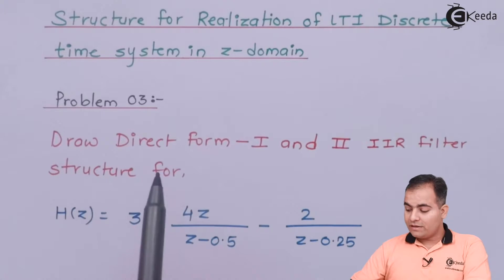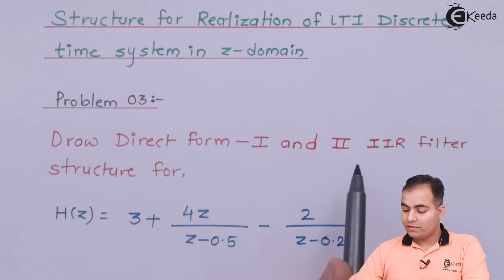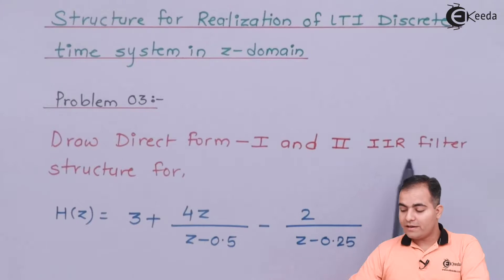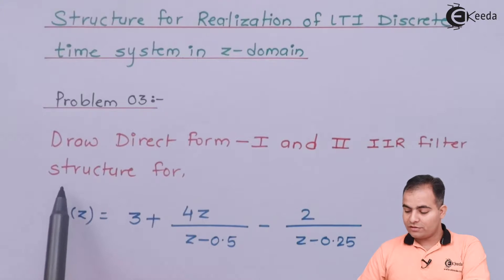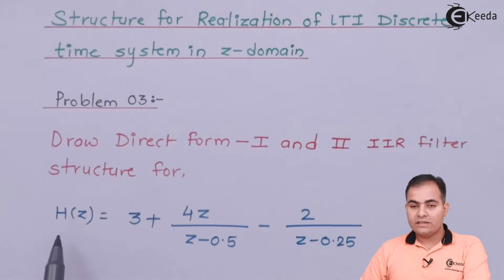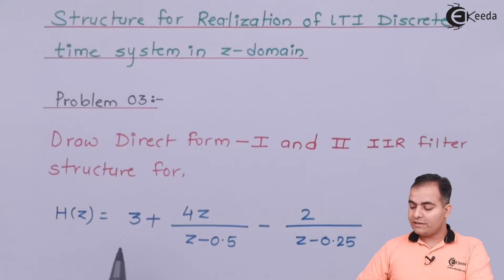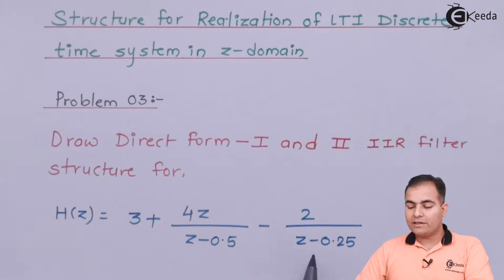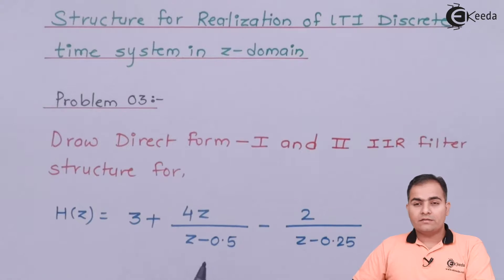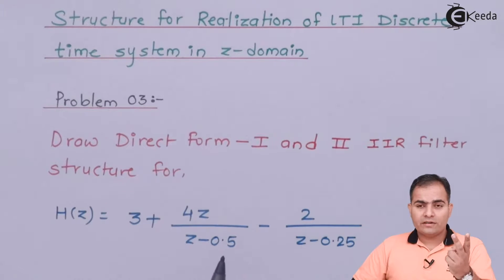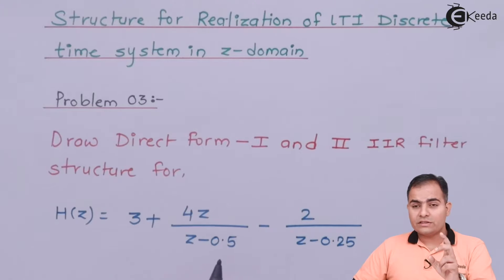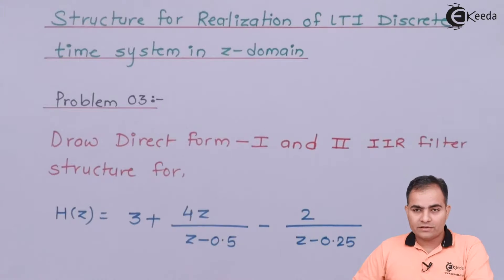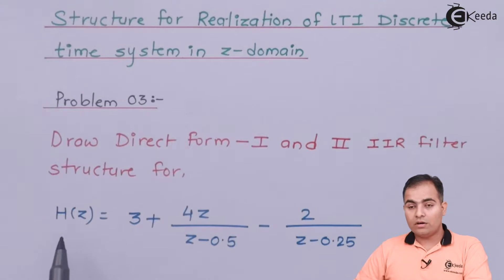The question is: draw direct form 1 and direct form 2 of an IIR filter structure. H(Z) is given as 3 plus 4Z upon Z minus 0.5, minus 2 upon Z minus 0.25. In the last 2 numericals the question was a differential equation, but here H(Z) is already given.